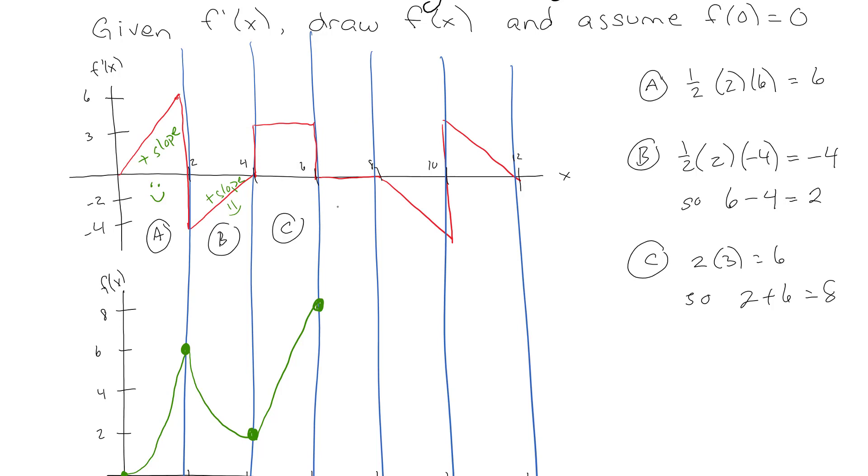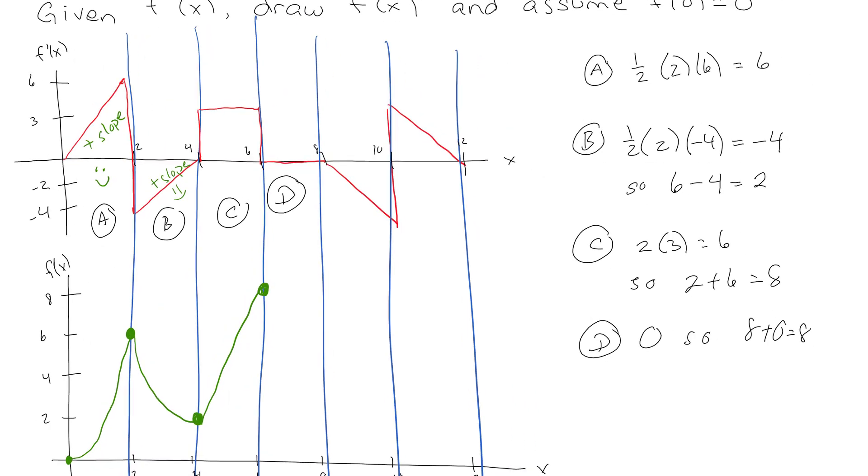Now in section D, there's actually no area under the curve. So we have eight plus zero is still eight, so we're going to just stay at eight. And again, we have a zero slope, the integral of a zero slope is just a straight line, and so we're just drawing that in there.